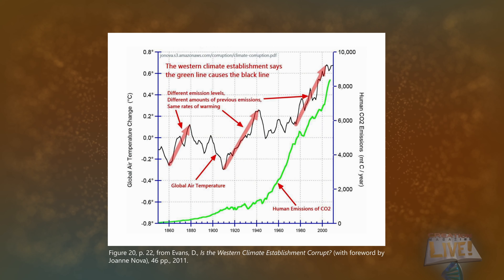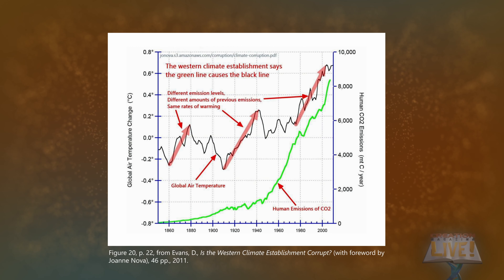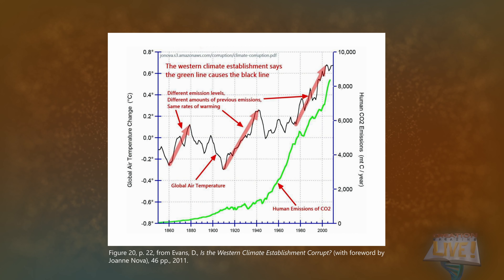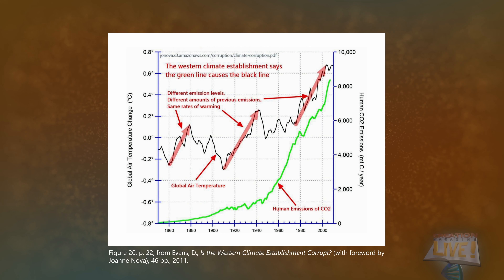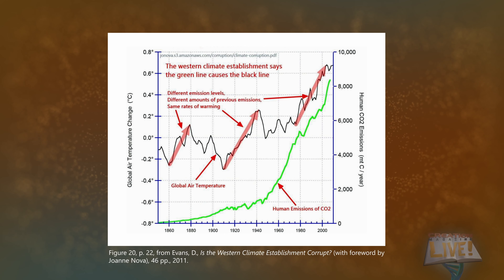Meanwhile, the planet has warmed by about 0.8 degrees Celsius since 1880, but half of this occurred before any significant change to the CO2. This graph shows both the man-made CO2 emissions and global temperature changes from 1850 to 2010. The green line shows an increase in man-made CO2, most of it since 1940. The black line shows fluctuations in overall temperature. Notice that the rate of temperature increase from 1860 to 1880, when there was relatively little man-made CO2, is about the same as for the most recent period when emissions were about 60 times higher.